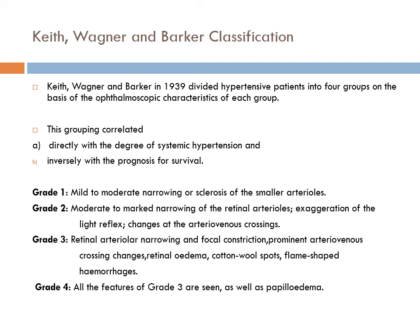There are many classifications — your homework is to find as many as possible. The Keith-Wagener-Barker classification, given in 1939, is an old classification based on ophthalmoscopic characteristics. This classification correlated directly with the degree of hypertension and inversely with prognosis, giving a 5-year survival rate. Find out the details of the 5-year survival rate by this classification. Note that it is no longer considered valid.